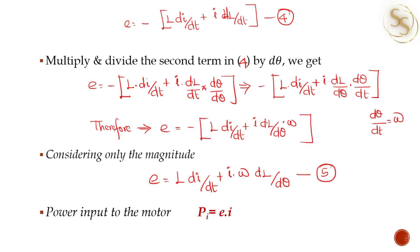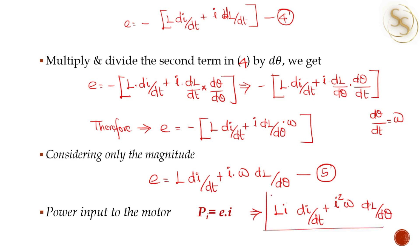The equation for input power is P equals E times I. Therefore, the input power to the motor is: P_in equals LI times dI/dt plus I² times omega times dL/dθ. This is the final equation for input power to the motor.